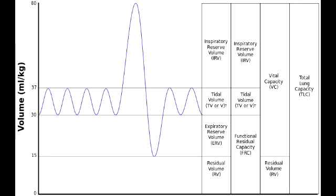What are the four different lung volumes? The four different lung volumes include the tidal volume, the inspiratory reserve volume, the expiratory reserve volume, and the residual volume.